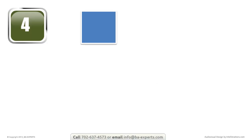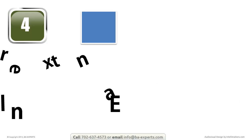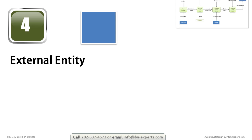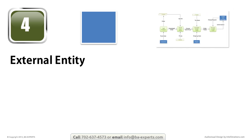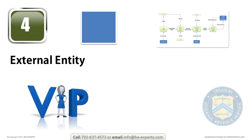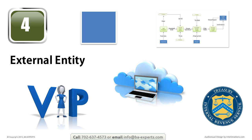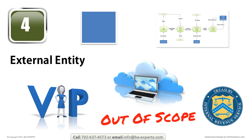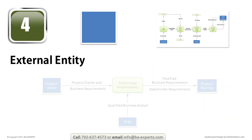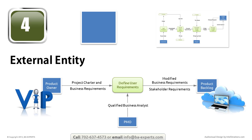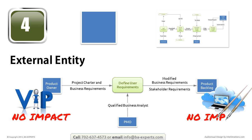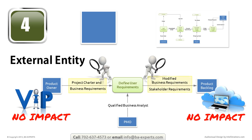A simple square, with or without an optional shadow, represents an external entity. In the world of data flow diagramming, an external entity represents a person, organization, or application that is out of scope from the perspective of the DFD or the project. Specifically, it implies that the represented object is not going to be analyzed or impacted by any project using this diagram, but the interface to the object has to be analyzed.